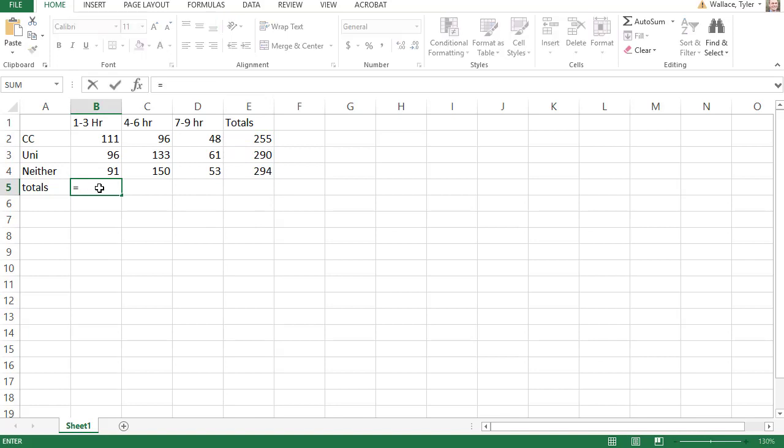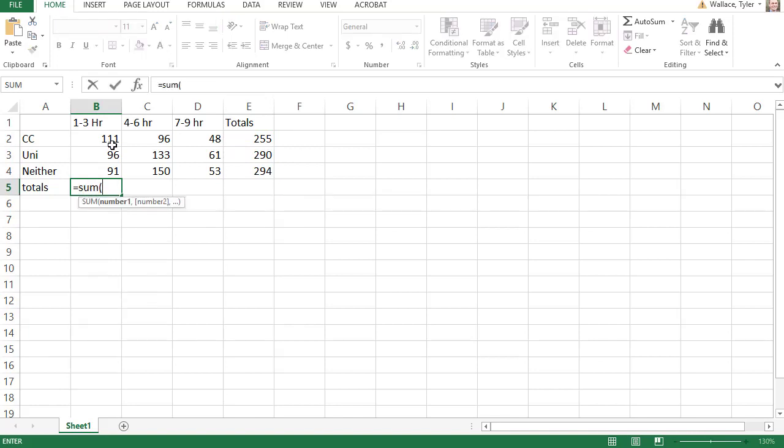For the columns, I can say equals SUM for sum. Open a parenthesis. Select the numbers I want to add. And when I hit tab or enter, I get that total. Clicking the dot, I can drag it across and we get our totals.